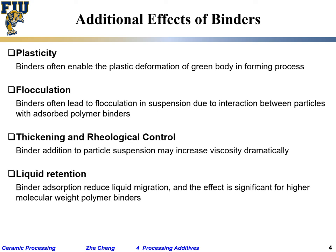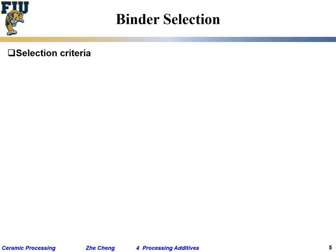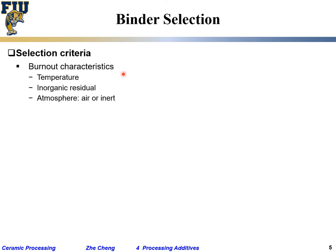Binder selection criteria — burn-out characteristics are very important: at what temperature does it burn out? If your material can only handle 500°C, you do not want a binder that only burns out cleanly above 500°C. You also need to know whether it burns out in air or in an inert atmosphere. For many electronics applications we want to fire in nitrogen, so you cannot use a binder that requires oxygen to burn out.